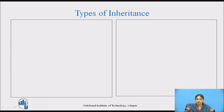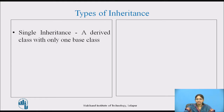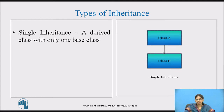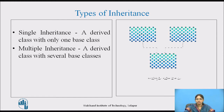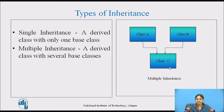Let us see the types of inheritance. Single inheritance: a derived class with only one base class is called single inheritance, shown as a structure with a single base class and a single derived class. Multiple inheritance: a derived class with several base classes is called multiple inheritance — a derived class derived from more than one class, for example class C derived from class A and class B.